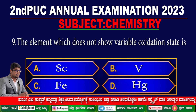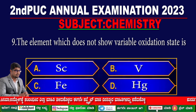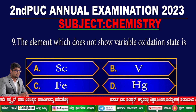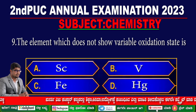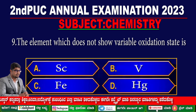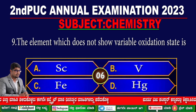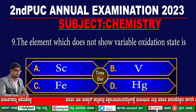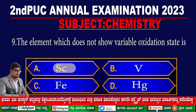Question 9. Which element does not show a variable oxidation state? Option A: [unclear], option B: [unclear], option C: [unclear], option D: [unclear]. The correct answer is option A.